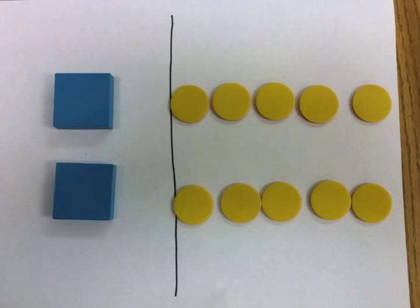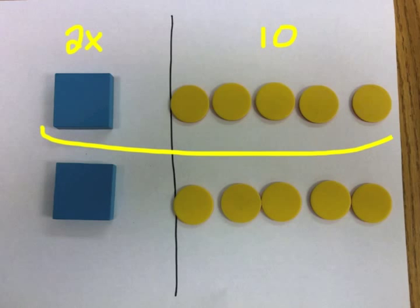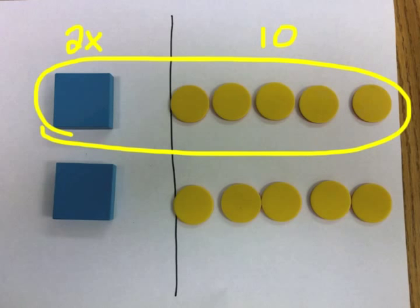Here on the mat, using the counters, I've represented 2X on the left-hand side, and then 10 on the right-hand side. What I'll need to do is group the counters to the variable. You can see if I just have one variable X, it's going to equal five.